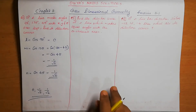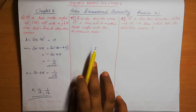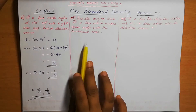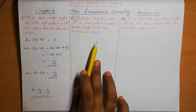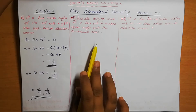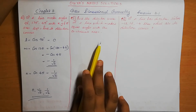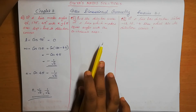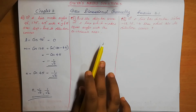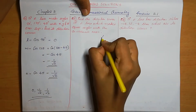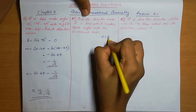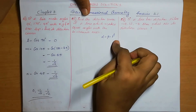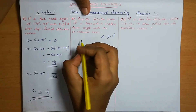Question number 2: if the direction cosines of the line make equal angles with the coordinate axes, we need to find the direction cosines. Equal angles means all the angles alpha, beta, gamma are the same.